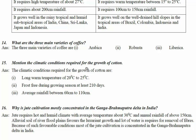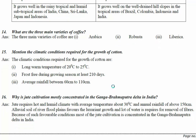Cotton requires a long warm temperature of 20 to 25 degrees Celsius. It needs frost-free conditions during the growing season of at least 210 days, and an average rainfall of 60 to 110 centimeters.